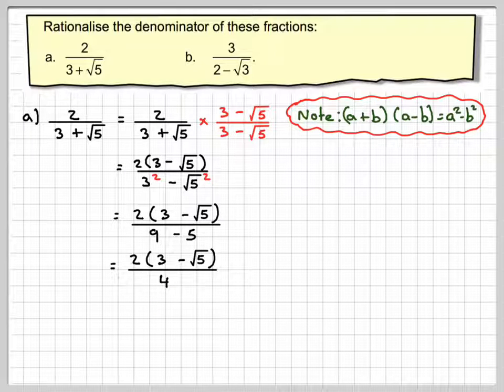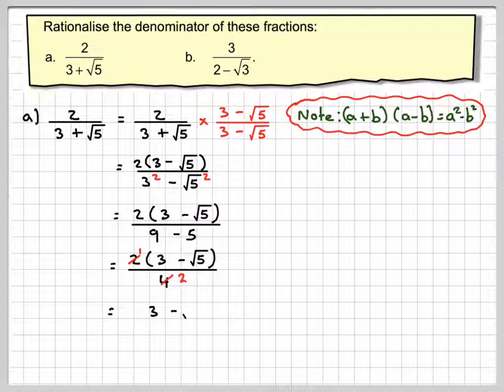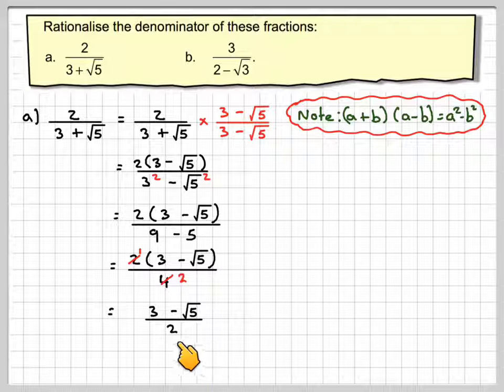And then the 2 and the 4 will cancel, and then we're just going to get 3 minus root 5 over 2.